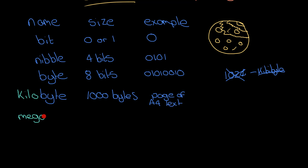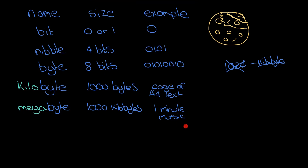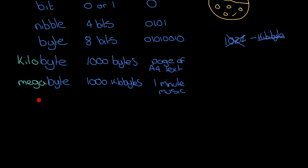'Mega' is Greek for great, so a megabyte is a thousand kilobytes. You'll find each unit is a thousand more than the last one. The kind of thing you can store in a megabyte is about one minute of music.